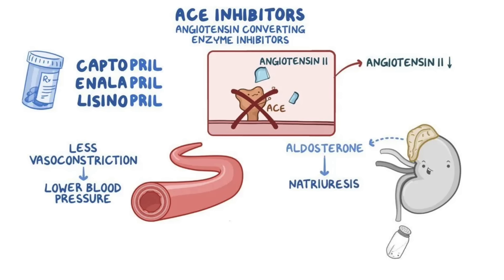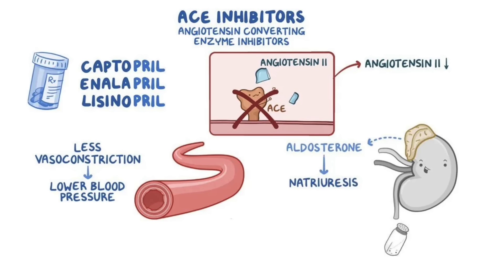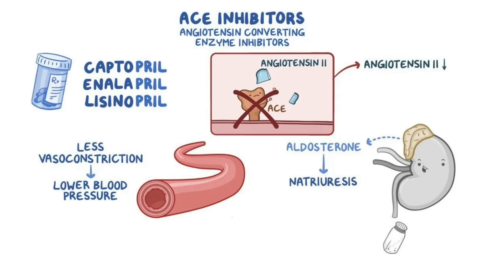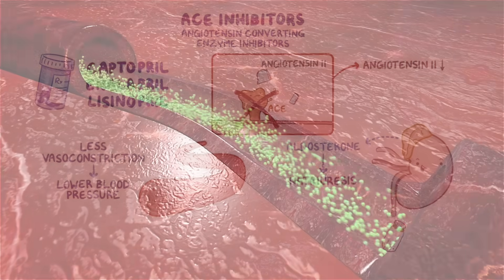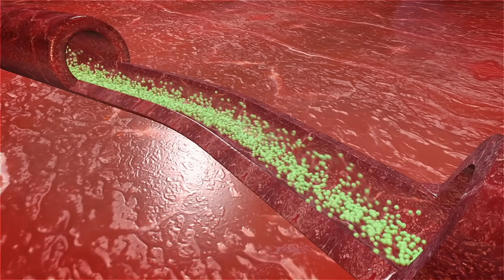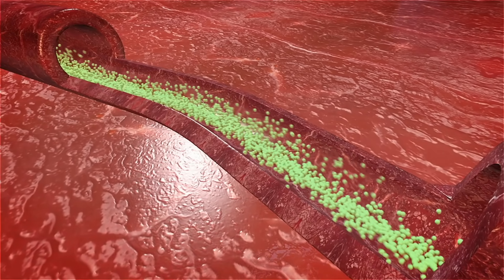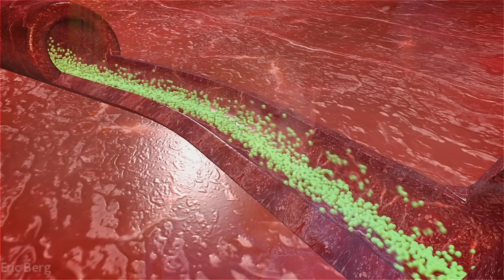Then there's an ACE inhibitor, which affects certain hormones that control fluid retention and blood pressure. But the side effect from that is the retention of potassium and the depletion of magnesium. Again, these solutions for cardiovascular problems really throw off your electrolytes in direct and indirect ways.